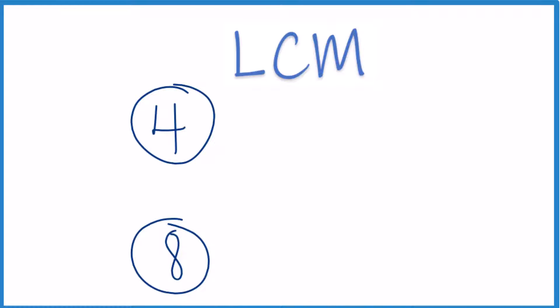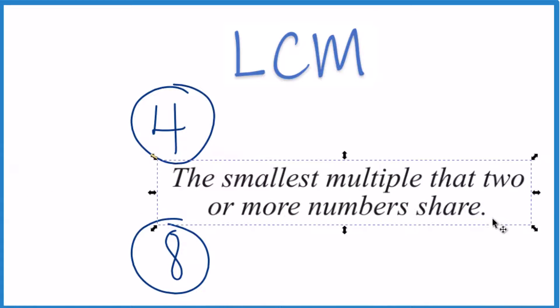I like to think of the least common multiple as the smallest number, the smallest multiple that these two numbers, 4 and 8, share. So they both go into it evenly, and it's the smallest one.